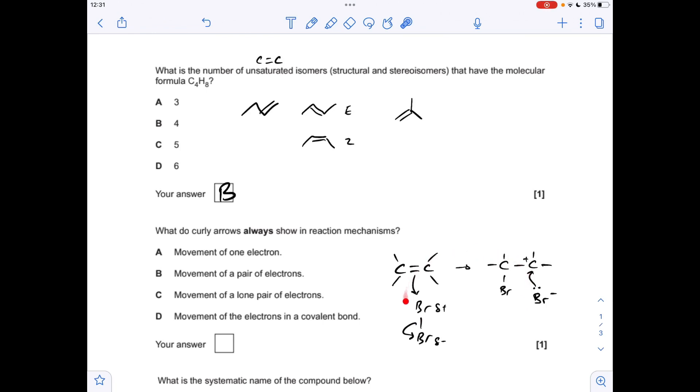Next one. You'll notice I've put up a mechanism for the reaction of an alkene with bromine to explain which one of these is the right answer. This curly arrow represents the movement of a pair of electrons from the pi bond. This curly arrow represents the movement of a pair of electrons from this covalent bond here. This curly arrow represents the movement of a lone pair of electrons. So the answer is B, the movement of a pair of electrons.